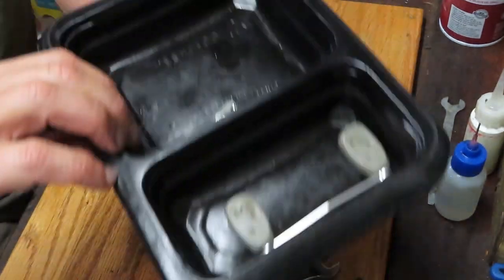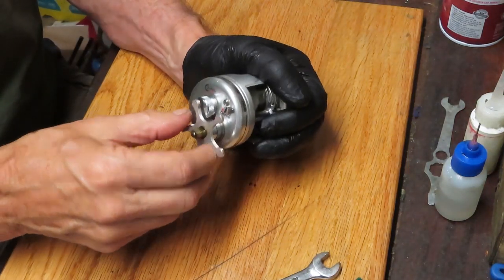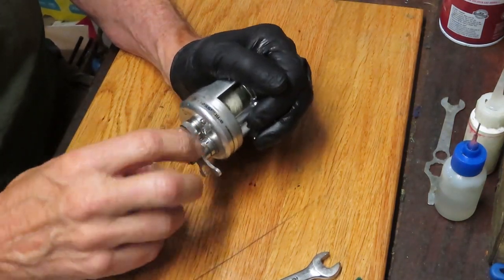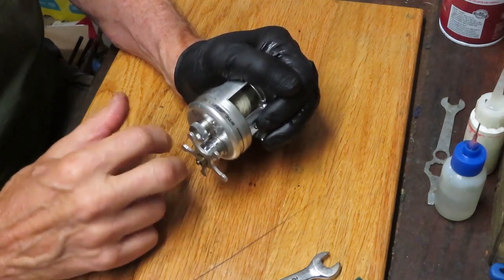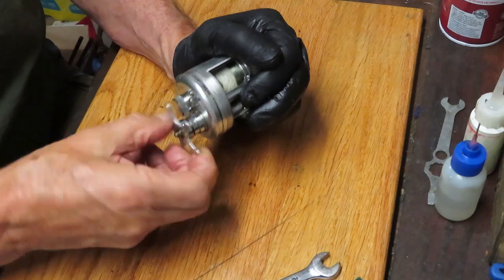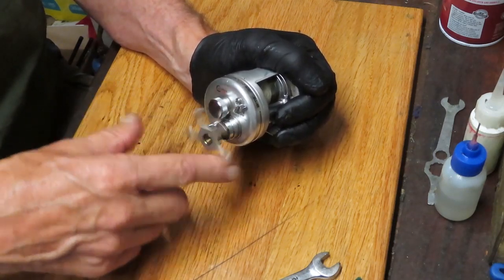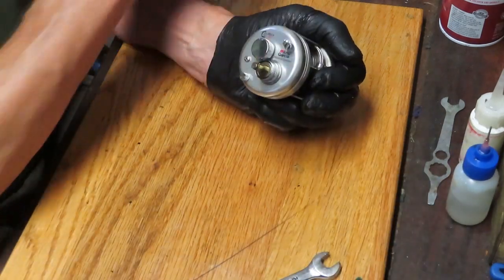And all the pieces and parts that I take off, they go into a parts tray. That way I know where they are when it comes time to reinstall. I'm going to take one more piece off here, and that is the star adjuster. And then I'm going to remove the side plate.